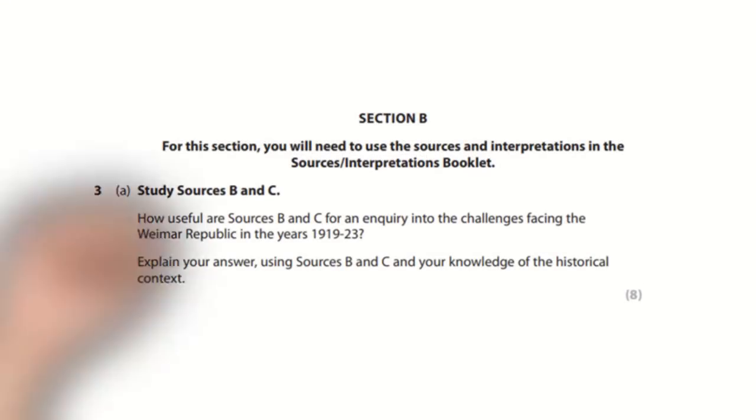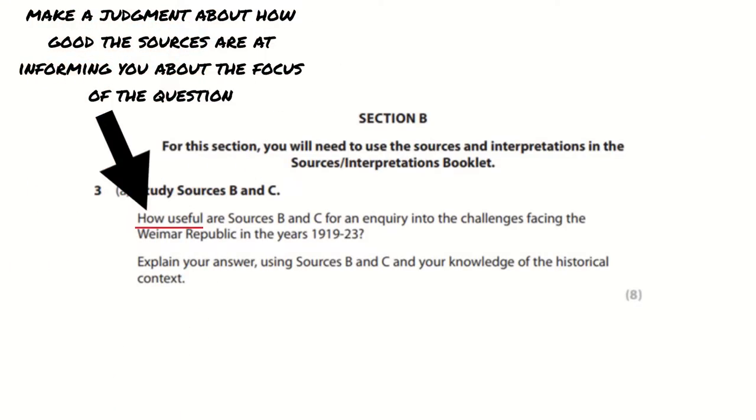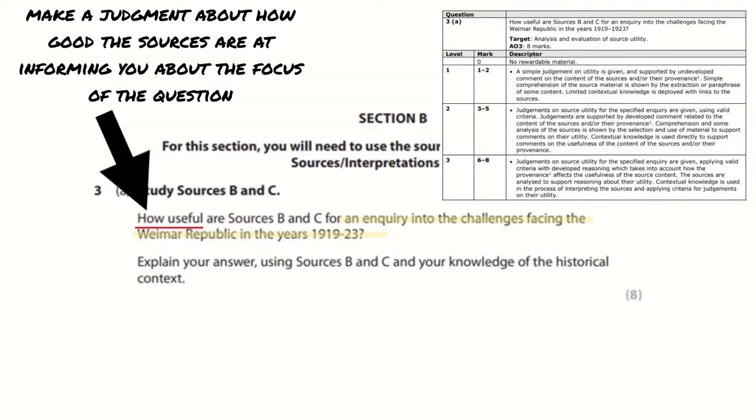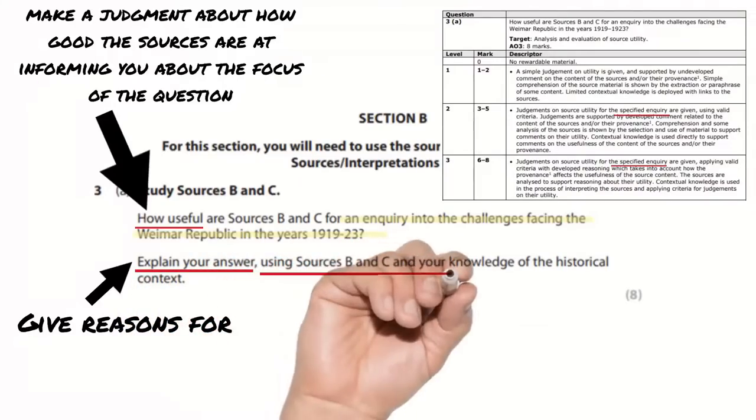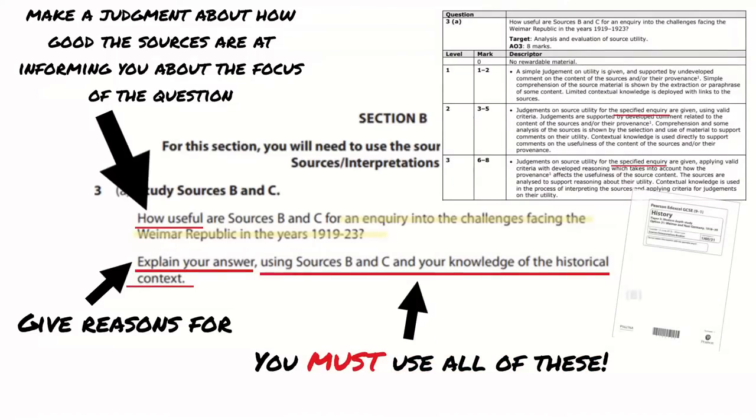And you need to assess the usefulness of both sources for the enquiry in the question and apply your knowledge of the event. So let's start by looking at a question and looking for those clues that are going to help us to get the best marks. So here's our question and the first thing we note is it's asking how useful. This means that you're going to have to make a judgement about how good the sources are at informing you about the focus of the question. Note the focus of the question here. We need to be laser focused on this because the mark scheme tells us that to get a level 2 or 3 answer we need to give judgements for the specified enquiry. It then asks you to explain, in other words give reasons for your answer and tells you that you need to use sources B and C and your own knowledge. So you must use all of these. You will find sources B and C in the sources and interpretations booklet which you are given separately. This is useful to us because it means that we can have the sources in front of us the whole time we are writing.